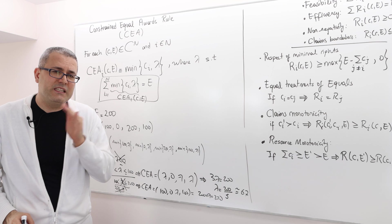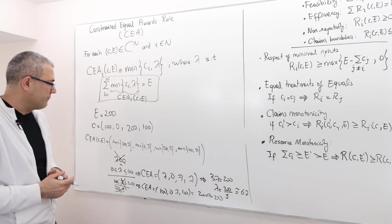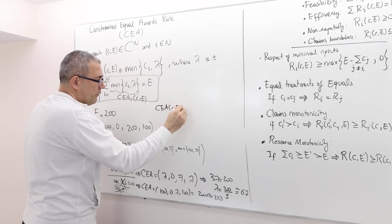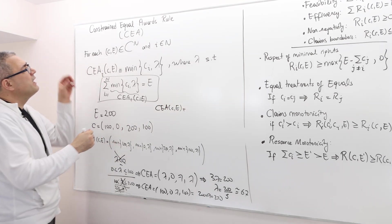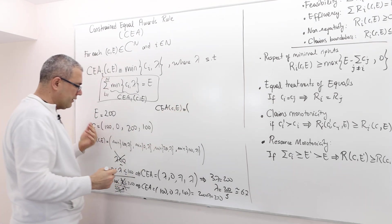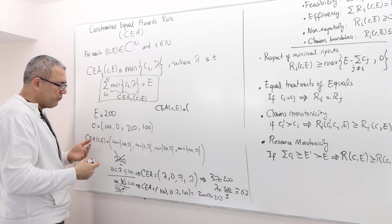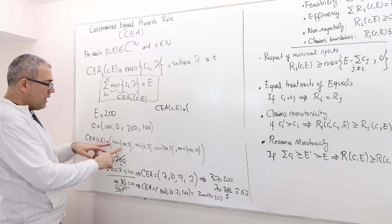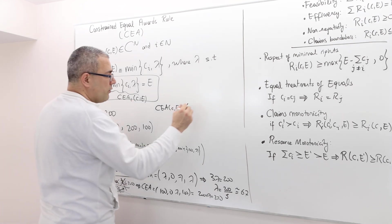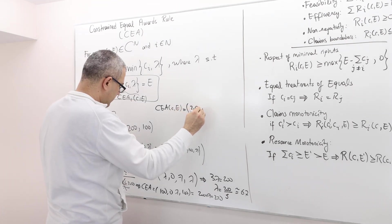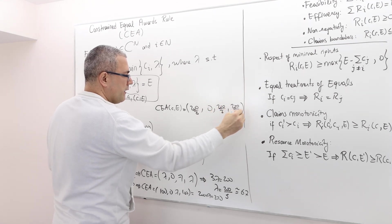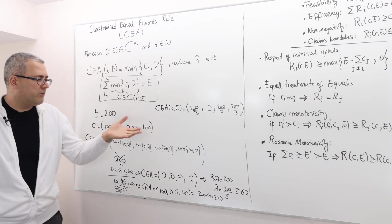Therefore, lambda equals 200 divided by 3. So the CEA of this problem, of this particular problem, meaning constraint equal awards rule, is going to distribute this $200 among these four players as follows: the minimum of 100 lambda, which is lambda, so it's going to be 200 divided by 3, 0, 200 divided by 3, 200 divided by 3. That's it.